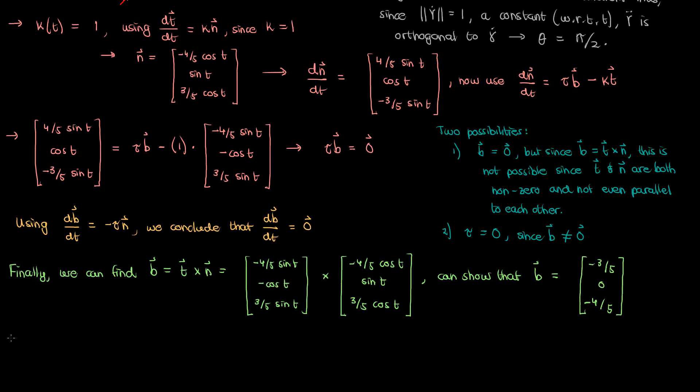So we've evaluated all the critical components of this curve gamma: its tangent, normal, and binormal vectors, their derivatives, and the curvature and torsion. The key intuition here is that since the torsion is zero, the curve doesn't curl out of its immediate plane — it stays in a single plane. That is precisely the meaning of torsion: the measure of how much a curve curls out of its osculating plane, formed by the vectors t and n. We've used the Frenet-Serret equations to arrive at this conclusion.